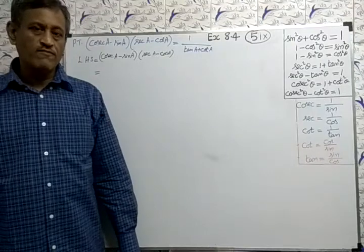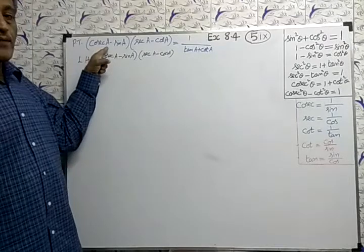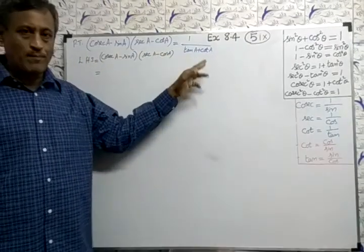It says 8.4, question number 5, subdivision 9. Cosec A minus sin A into sec A minus cos A equal to 1 by tan A plus cot A.